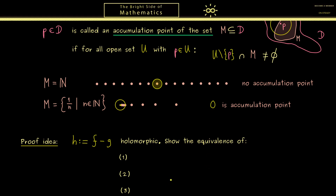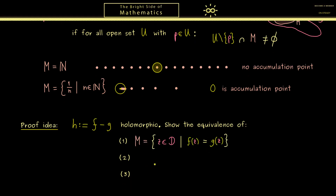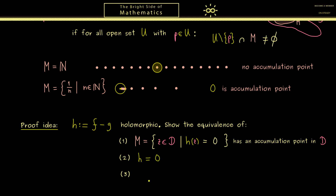These are the three statements from above but now formulated for the function h. The first statement was that the set M, where f and g coincide, has an accumulation point in d — and reformulated for h, this is the set where h is 0, so the set of zeros should have an accumulation point in d. Then the second statement was that f equals g, which now means h is equal to 0 — in other words h is just the zero function. And the last statement: there exists a c such that all the derivatives of h vanish at this point.